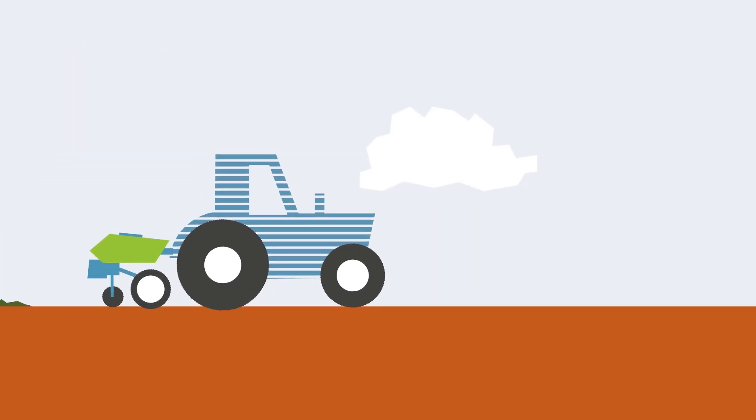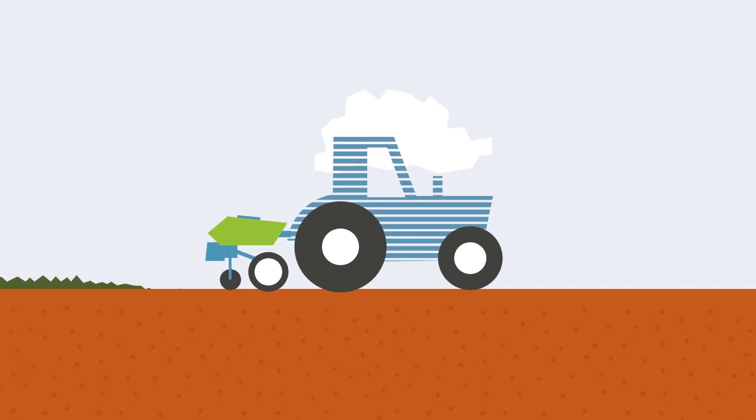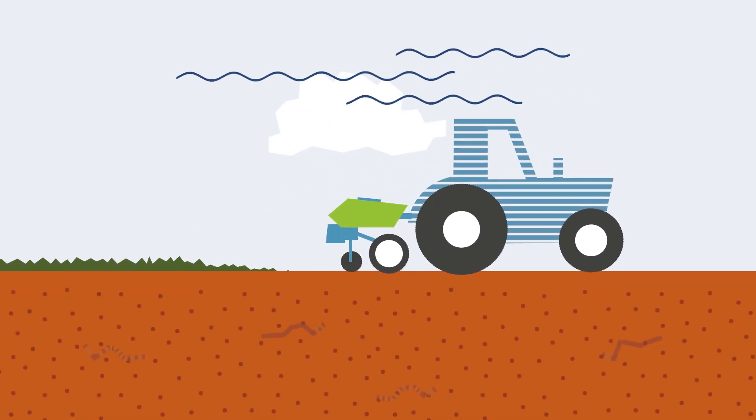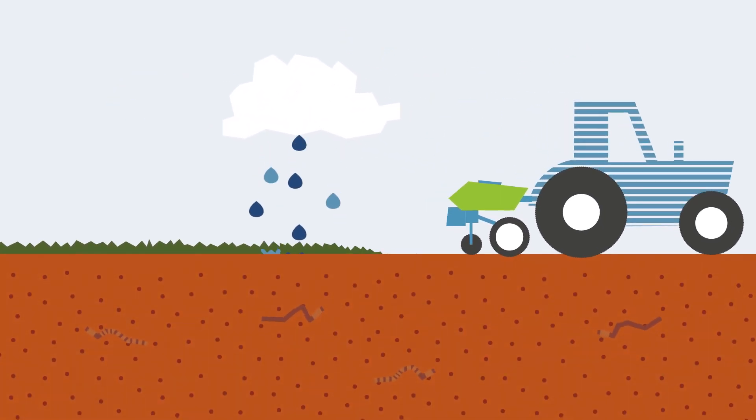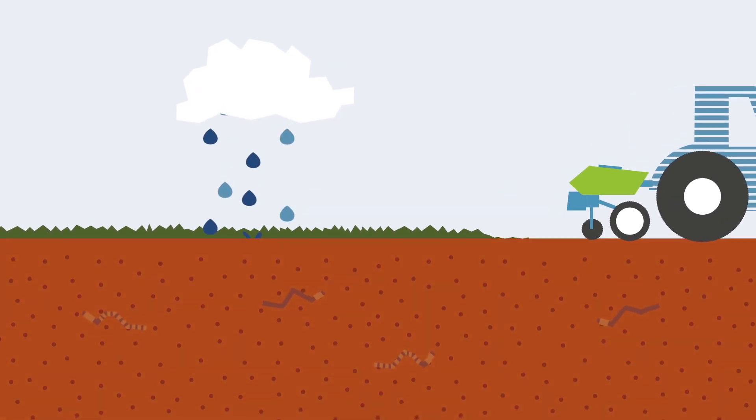And on our farm fields, cover crops are just more plants that stabilize soil in heavy rains, hold moisture, and improve overall soil health.